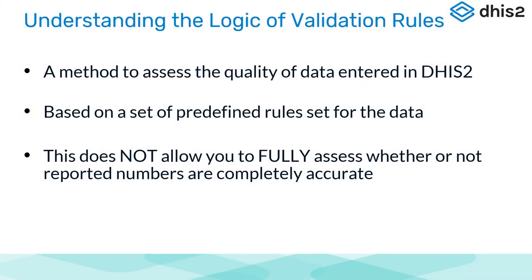If we want to understand the logic of validation rules, we need a method — it is a method to assess the quality of data entered in DHIS2. These rules are based on a set of predefined rules set for the data. Unfortunately, validation rules do not allow you to fully figure out whether the values reported are completely accurate; it is only based on what is in DHIS2. If a value is 25, you don't know what those 25 clients represent — you are just given the 25.